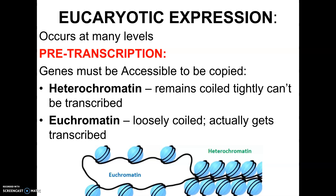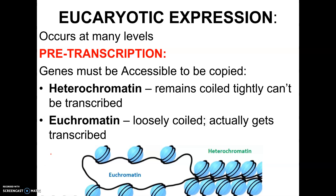Our DNA, unlike bacterial, is wound around histones, which are these blue things in the picture — proteins that our DNA coils around when it's chromatin. Our DNA can either be really tightly coiled, which is heterochromatin, or it can be loosely coiled euchromatin.